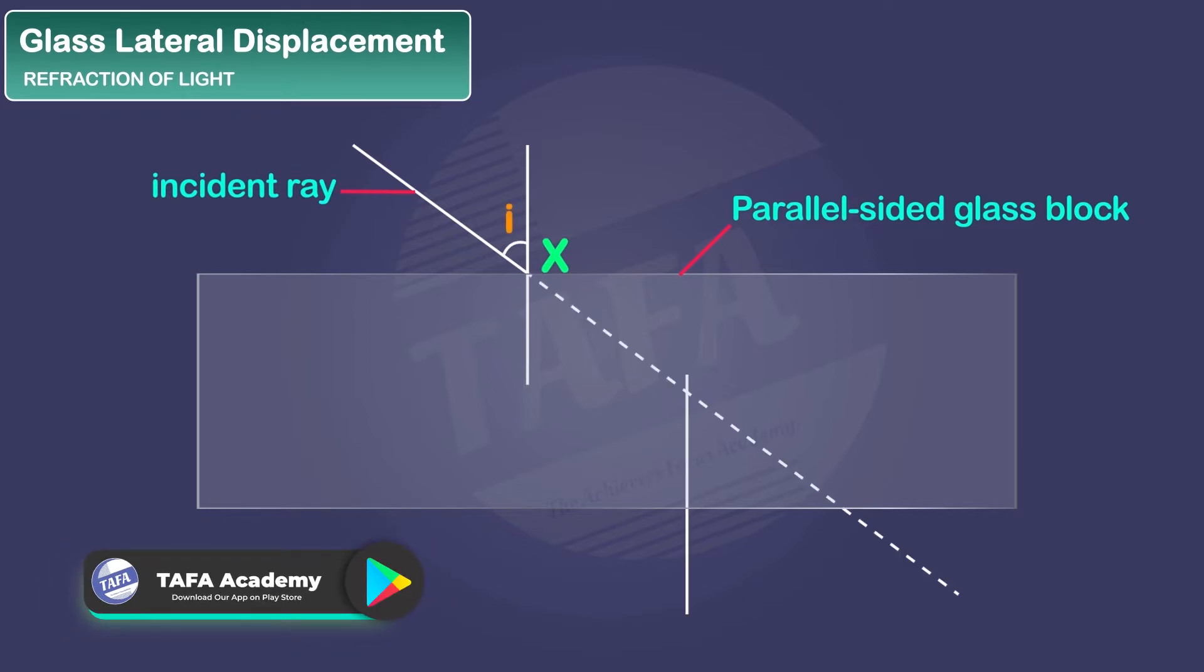From the diagram, you can see we have shown the corresponding angle of refraction. We have also extrapolated the initial direction of the angle of incidence. The ray of light passes through the glass and then gets to the glass-air interface.